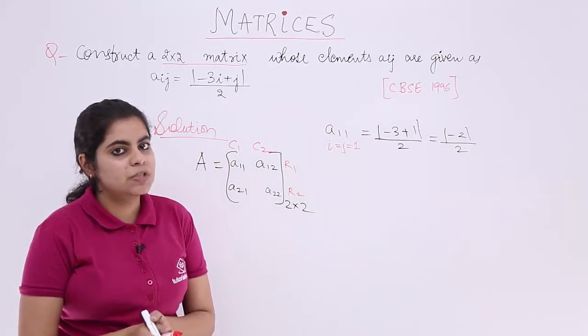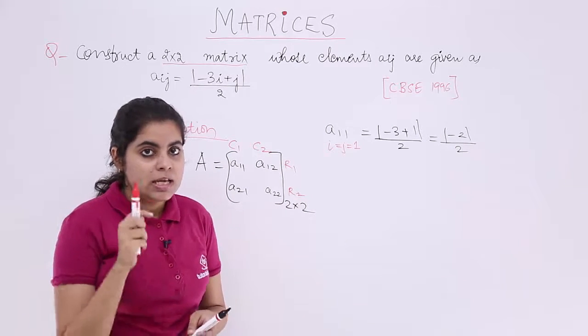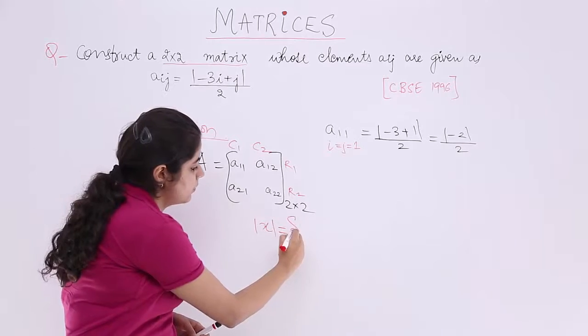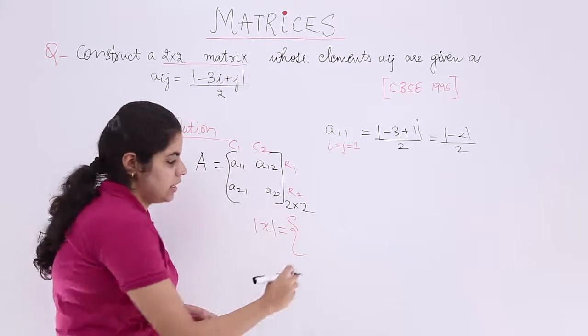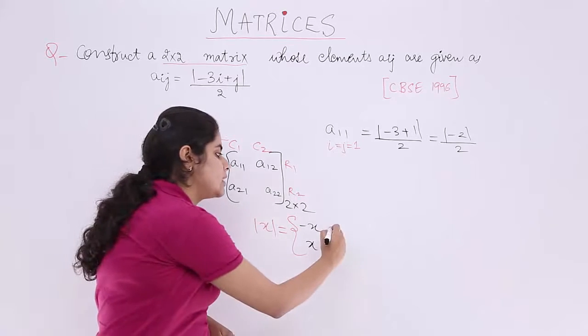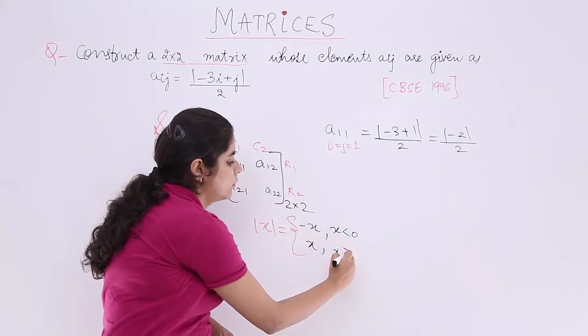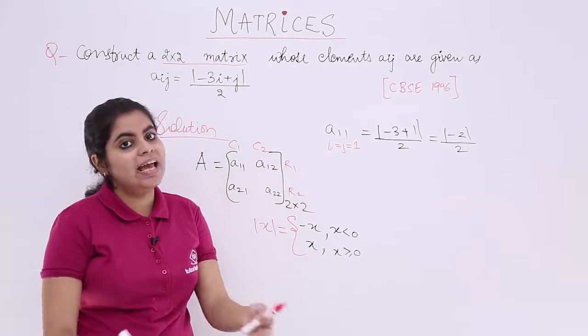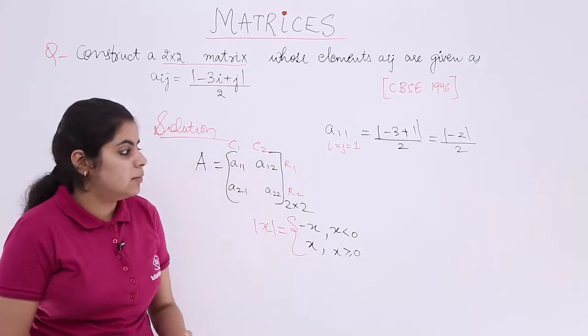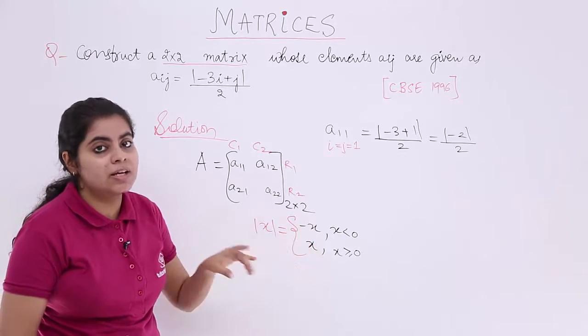Now you know what is the purpose of mod? The mod definition is something like this. If I have something called mod x, it would be split into two things: minus x and x. Minus x when x is less than 0 and x when x is greater than equal to 0. That means every time you have a number, this definition has to be followed.